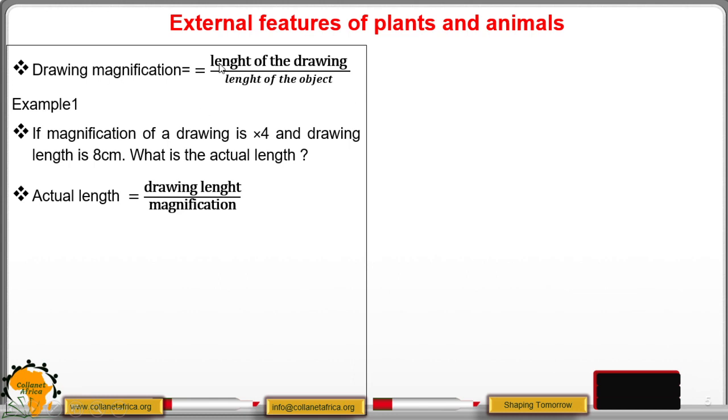We will eliminate magnification and we will have that the length of the object or the actual length to be the length of the drawing divided by magnification. And that is now that we have eight, that is the drawing length, and the magnification to be times four.